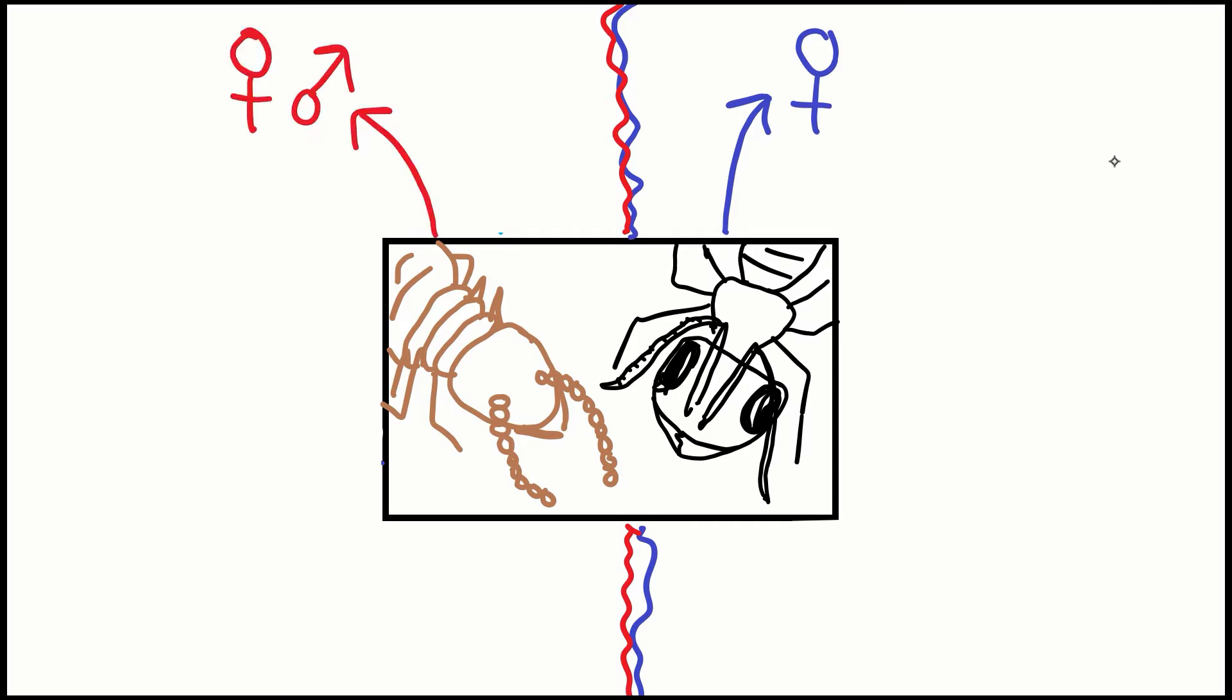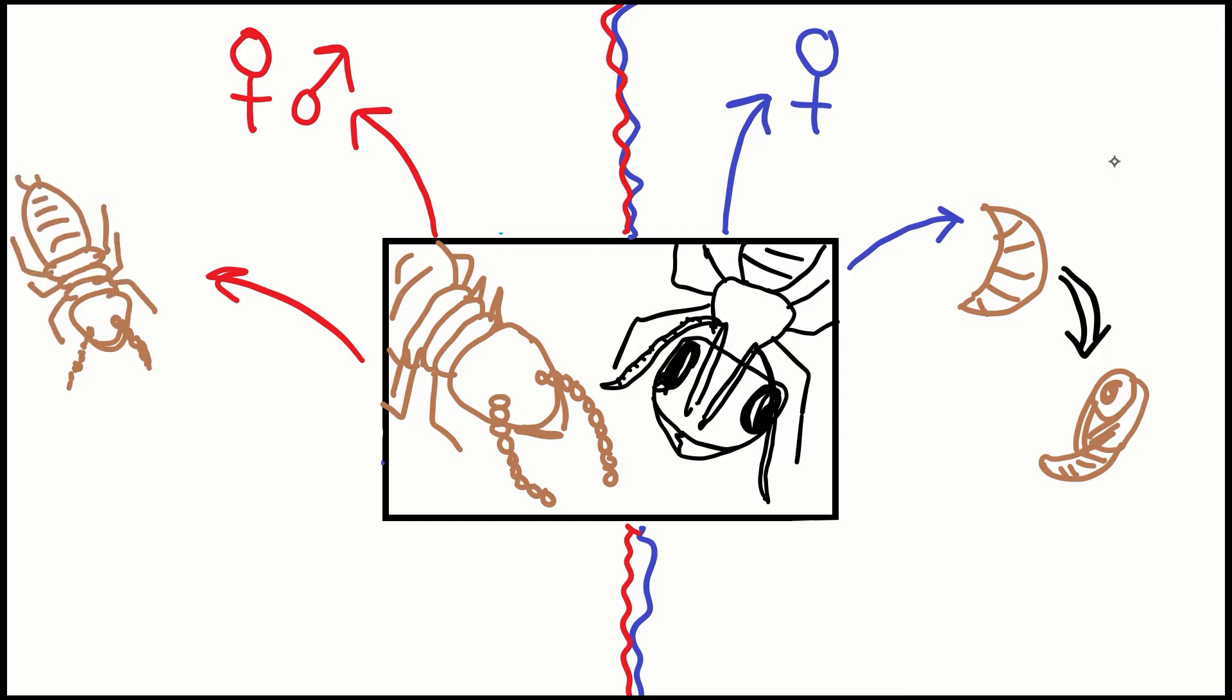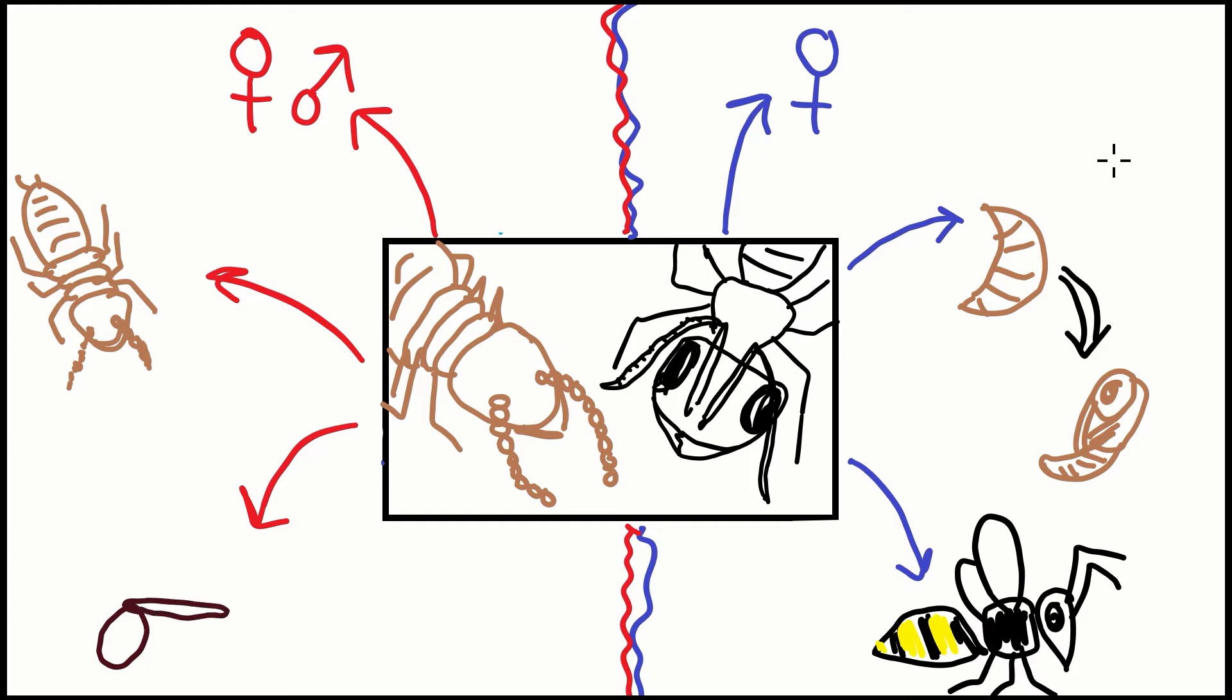Ant workers are all female, whereas termites have male and female workers. Ant eggs hatch into grubs that must be fed by workers, don't have legs, and have to pupate before becoming an adult ant. Termite eggs hatch into immature termites. They still have to be fed, but they do not require any type of pupa or resting stage before they can molt and go to work. Ants are related to bees and wasps, whereas termites are related to cockroaches. Yes, termites are actually just small communal cockroaches.